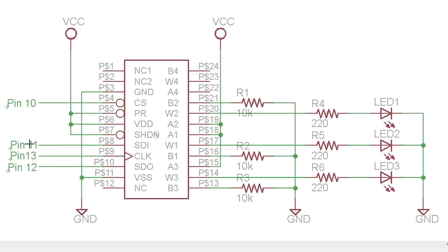When you use the SPI interface in Arduino, pin 11 will always be your serial data into the slave — master out slave in. Pin 13 will be your clock line always, and pin 12 will always be slave out data into the master. We won't really be using pin 12 but I'll hook it up anyway, as we're basically just sending data from master to slave. On the right side, we can see all of our LEDs hooked up. Coming out of the wipers, we're just going to have our LEDs going to ground.